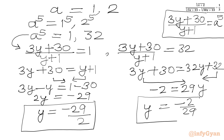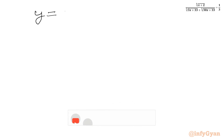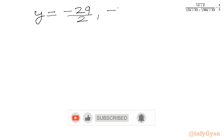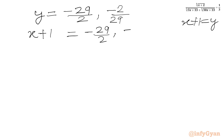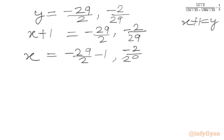So we have two real y values: y equal to minus 29 over 2 and y equal to minus 2 over 29. Since x+1 equal to y, we write x equal to y minus 1. Therefore x equal to minus 29 over 2 minus 1 equal to minus 31 over 2, and x equal to minus 2 over 29 minus 1 equal to minus 31 over 29. These are our final answers.